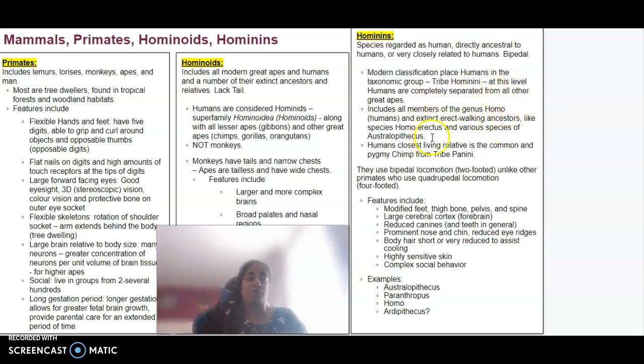A modern classification of humans is what we call the hominin. They're separated from all other great apes. They are the genus Homo, and we can also talk about Homo being related to or a descendant of Australopithecus. Basically, we use bipedal locomotion. We walk on two feet as opposed to other primates who are quadrupedal. Features for hominins include modified feet, thigh bone, pelvis and spine, larger cerebral cortex, reduced canines, a very prominent nose and chin, reduced eye ridges, body hair is shorter or much more reduced, highly sensitive skin and more complex social behaviour.